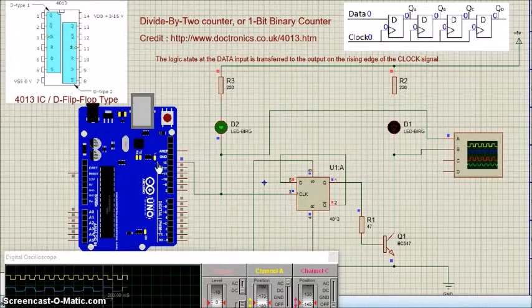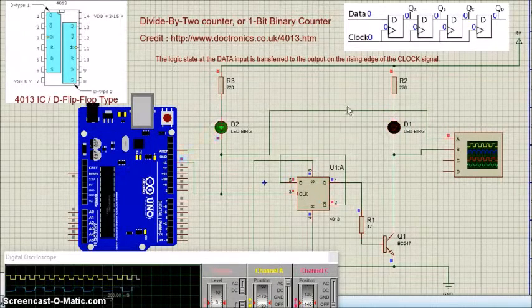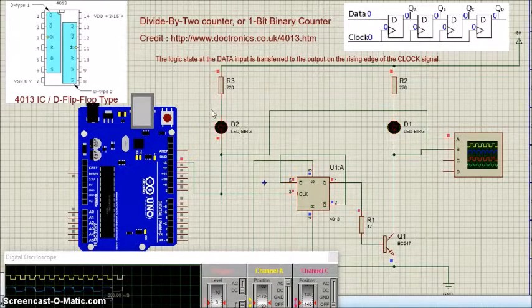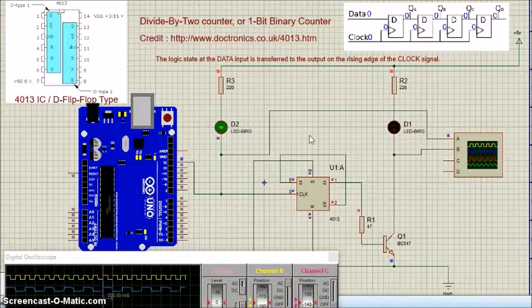As you can see, the number of pulses at the output of the bistable is divided by two compared with the number of pulses at the input.